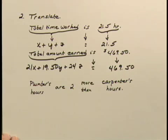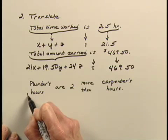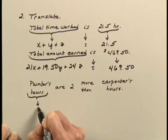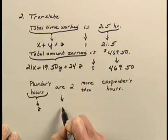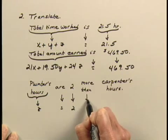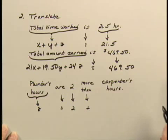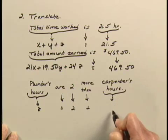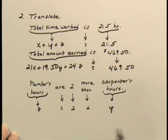The last thing that we were told was that the plumber worked two hours more than the carpenter did. We assigned the variable Z to the number of hours the plumber worked, so Z is equal to 2 more than the carpenter's hours. Since we assigned Y to the carpenter's hours, we have Z equals 2 plus Y.